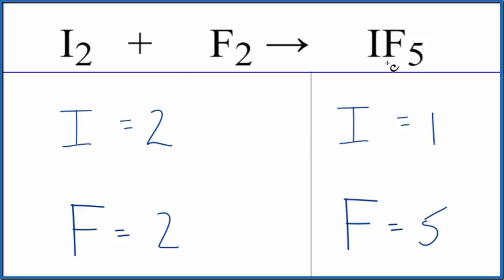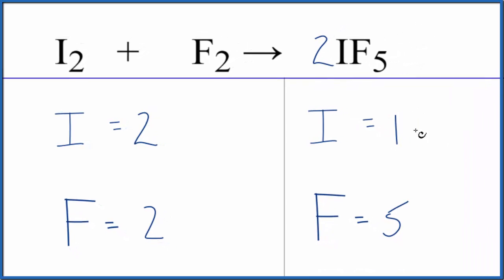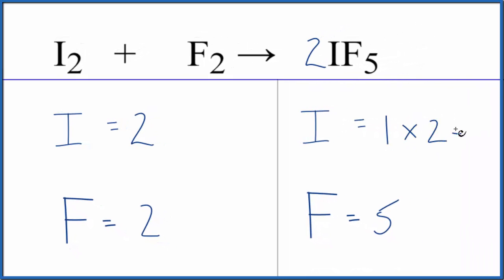So let's just put a 2 in front of the IF5. 1 times 2, that'll give us two iodine atoms, which is kind of nice. That balances the iodine atoms.